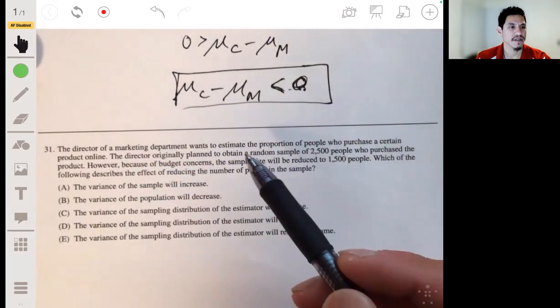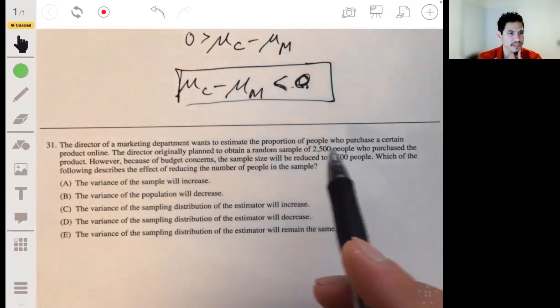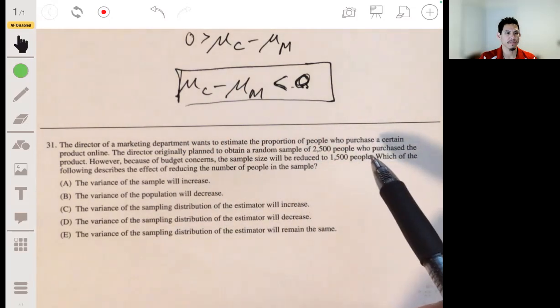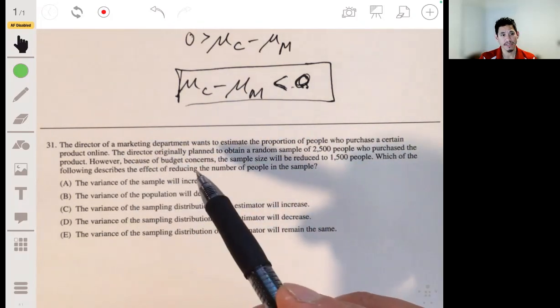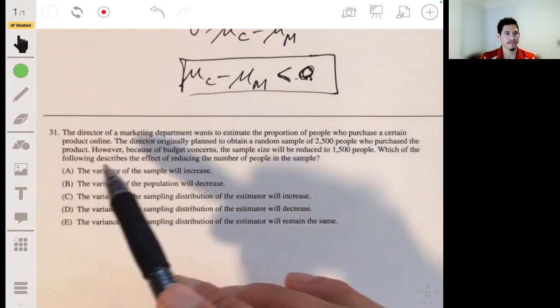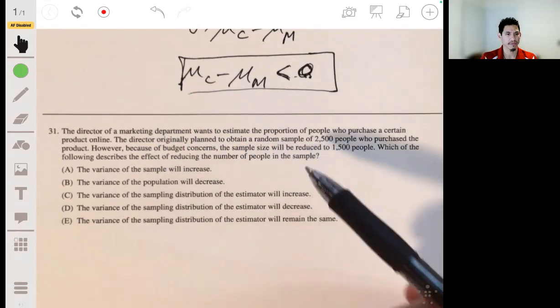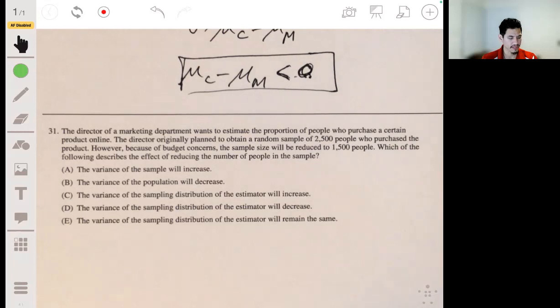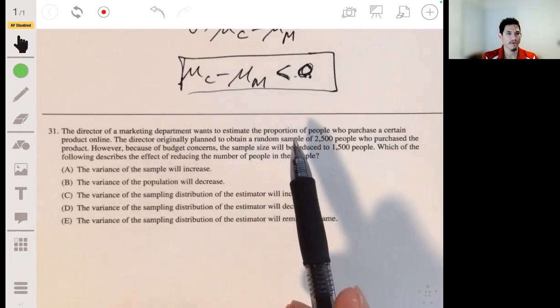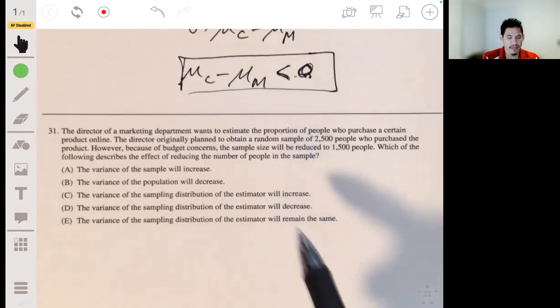The director of the marketing department wants to estimate the proportion of people who purchase a certain product online. The director originally planned to obtain a random sample of 2,500 people who purchased the product. However, because of budget concerns, the sample size will be reduced to 1,500 people. Which of the following describes the effect of reducing the number of people in the sample?